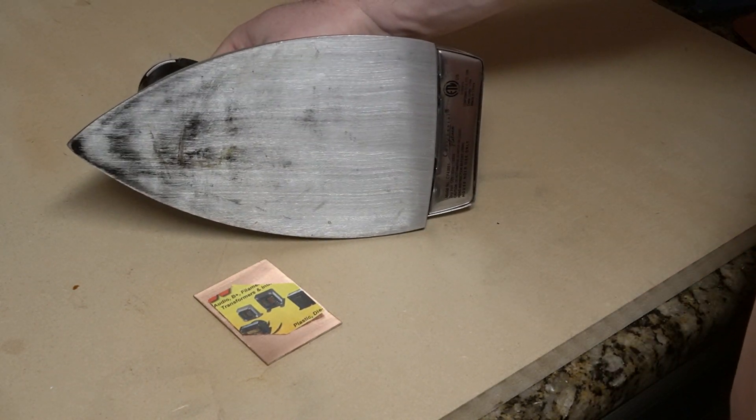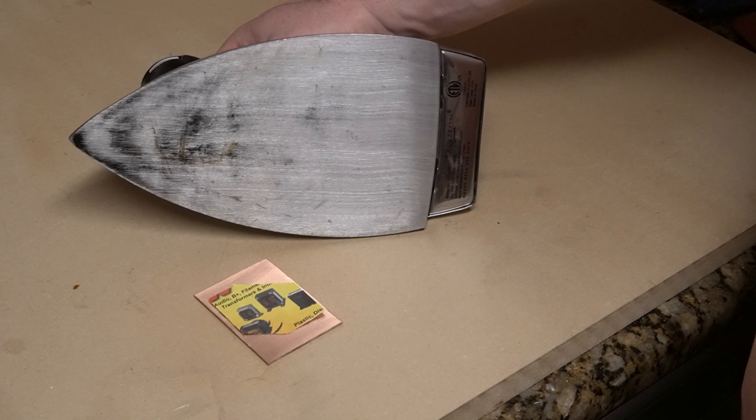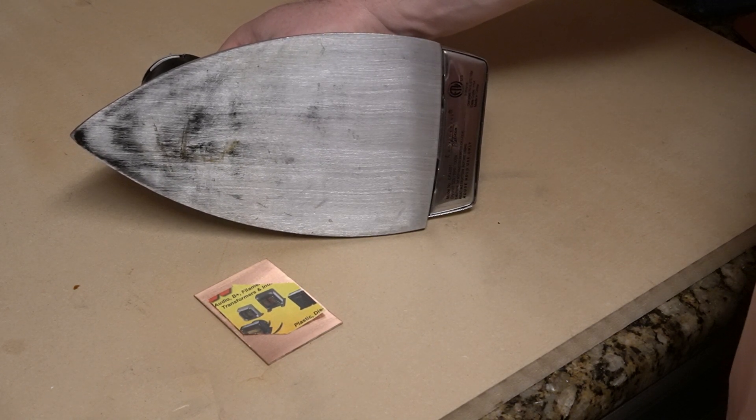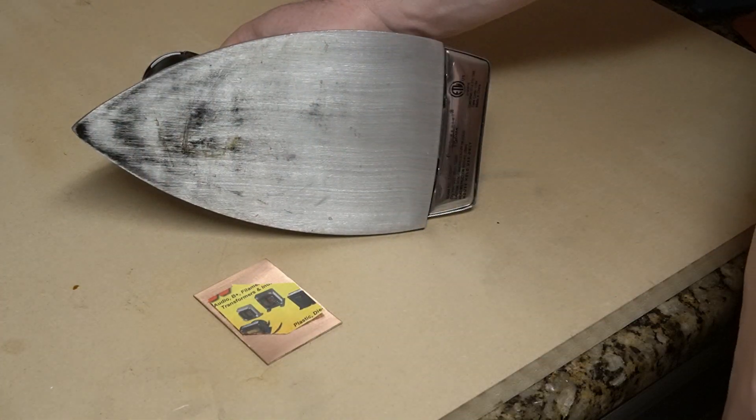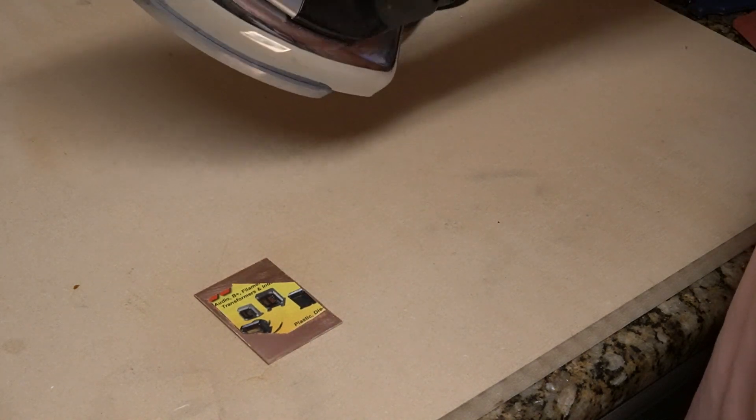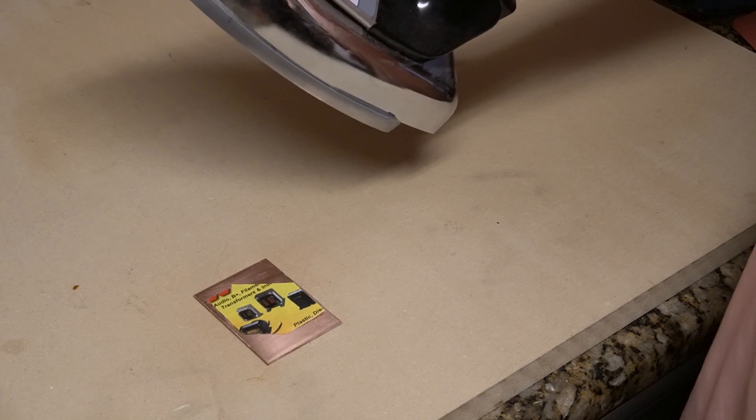I bought this iron specifically for applying traces to copper. It has no steam function, so there's not the little oval openings around the toe of the iron. And I'm running it at a wool setting, so not as hot as it'll go.